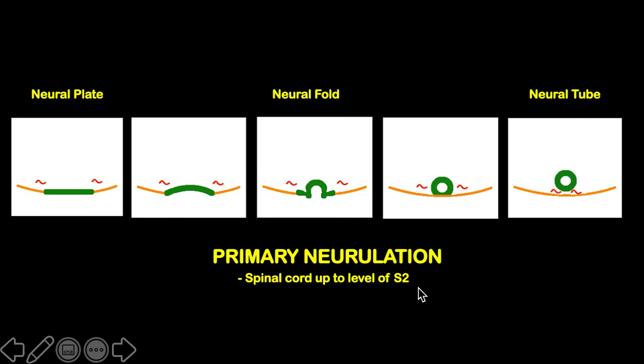The distal cord, on the other hand, is formed by another process called secondary neurulation, which is a topic for another day.